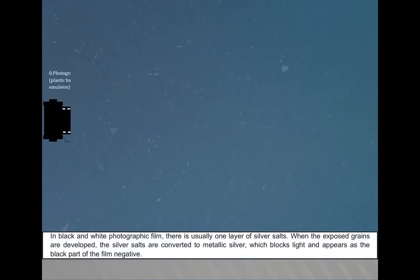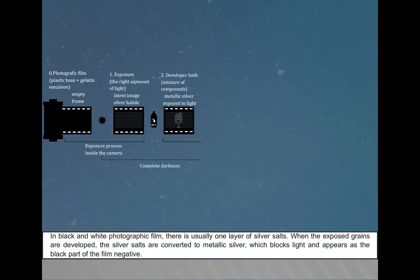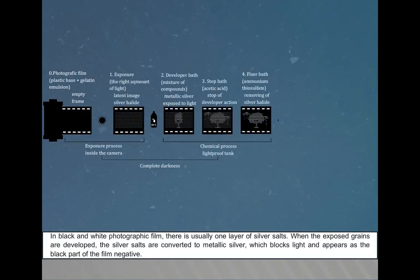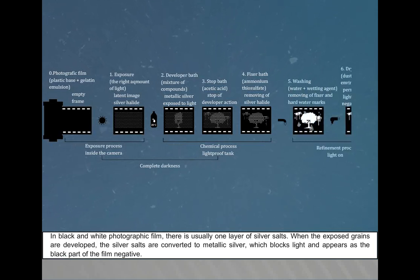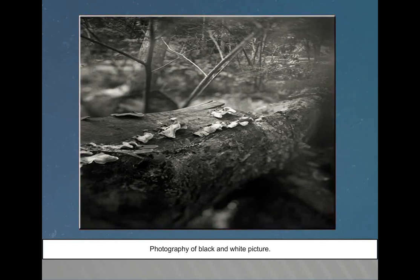In black and white photographic film, there is usually one layer of silver salts. When exposed grains are developed, the silver salts are converted to metallic silver which blocks light and appears as the black part of the film negative. Photography of black and white picture.